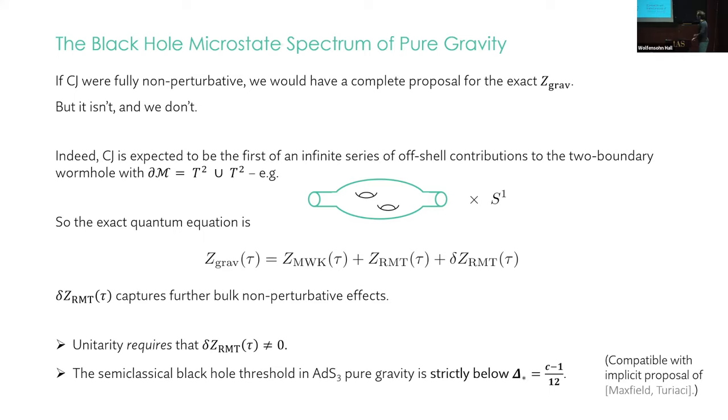And those further pieces would capture further non-perturbative bulk effects, which presumably, although not yet proven, are suppressed exponentially in central charge. From this point of view, we can argue that, first of all, as I said before, unitarity requires that this piece is non-zero. So this gives some kind of independent motivation for why these wormholes should contribute. And second of all, this also shows you that the semi-classical black hole threshold in pure gravity is strictly below C minus 1 over 12. I don't have so much time to go into this, but the argument is simple. If there were no other states below C minus 1 over 12, then when you subtracted them out and perform the large C expansion, you should get something unitary. But as I said before, this plus this is not unitary. So there's some kind of order of limits issue. There needs to be other stuff just below the threshold, which restores unitarity, if you like. And this was implicit in the proposal of Maxfield and Turiaci, who gave a kind of partial explanation for how this shift in the threshold by an exponentially small amount might happen.